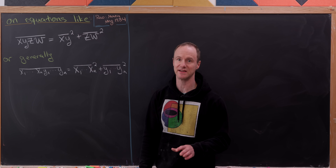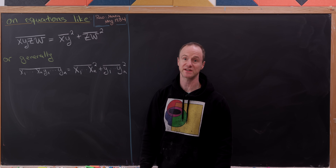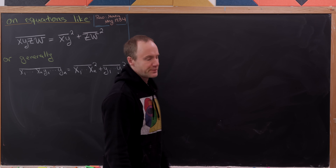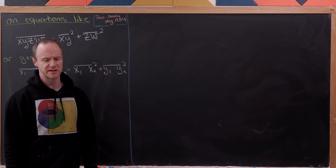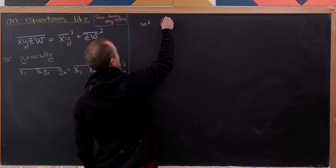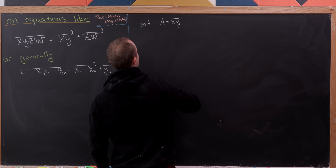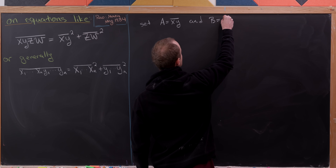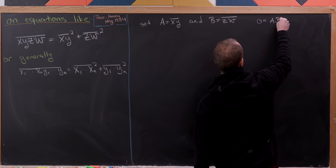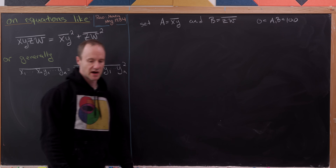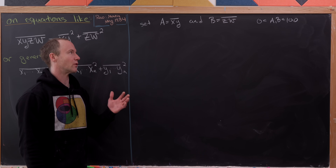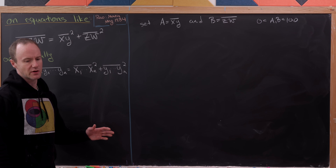Let's look at the four-digit case first and then generalize. We're dealing with groupings of two digits at a time, so let's set capital A equal to the two-digit number with digits x and y, and capital B equal to the two-digit number with digits z and w. That means A and B are between 0 and 100, not including 0 or 100.